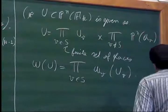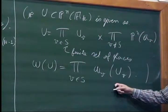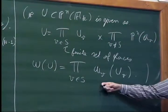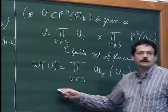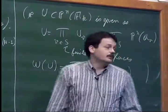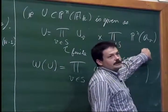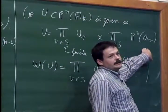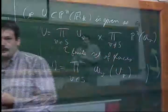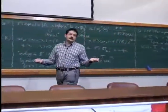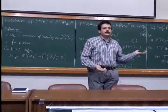Here it's useful to have probability measures because then we can define things in that way. If we did not have probability measures, we would need the product of the volumes of P^n(Q_v) to converge, and we'd have to do some work. But here, since they're probability measures, it's completely easy.